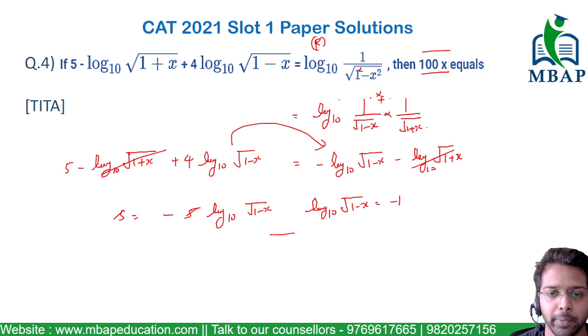Removing the log gives us √(1-x) = 1/10, or squaring both sides: 1-x = 1/100.